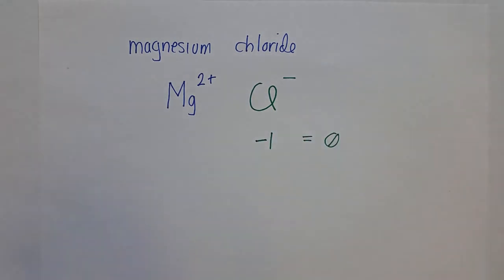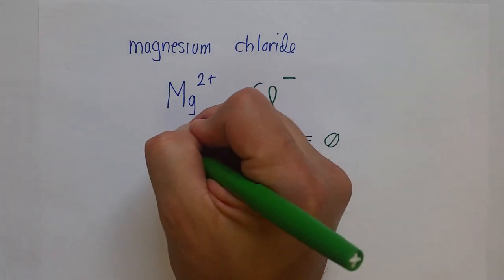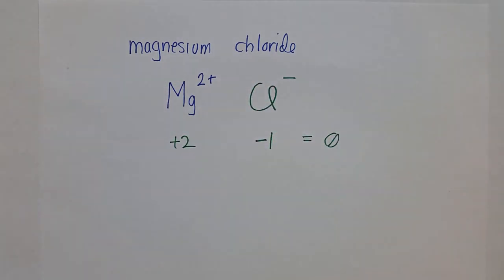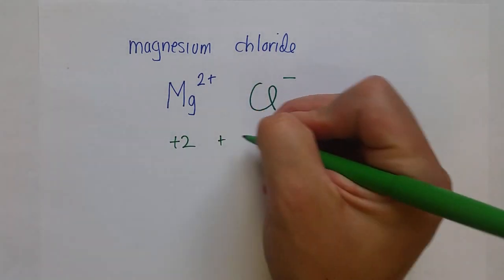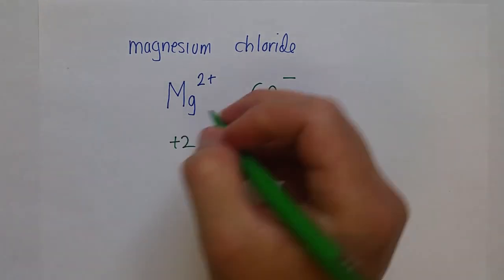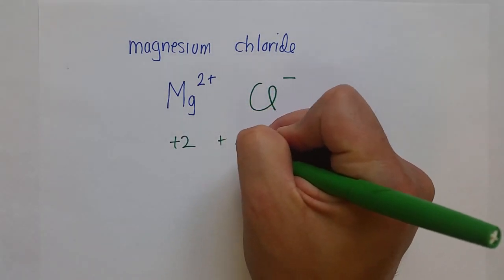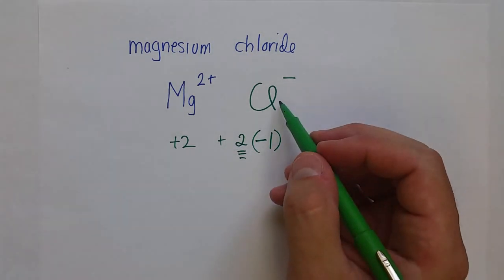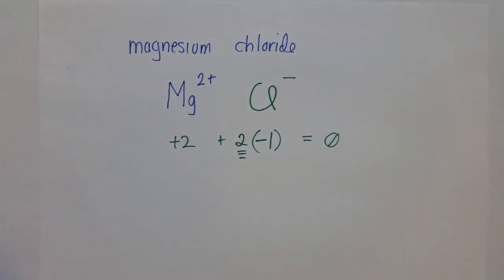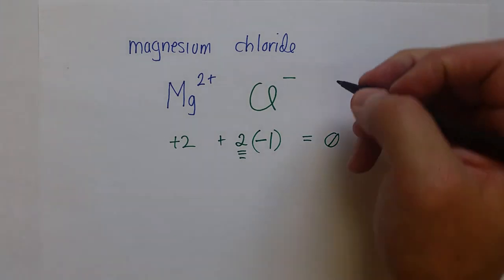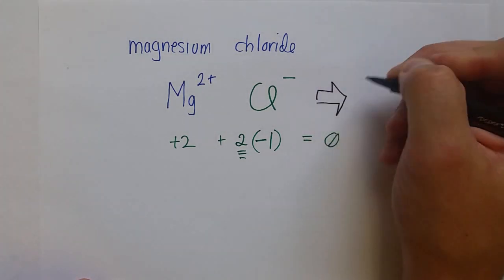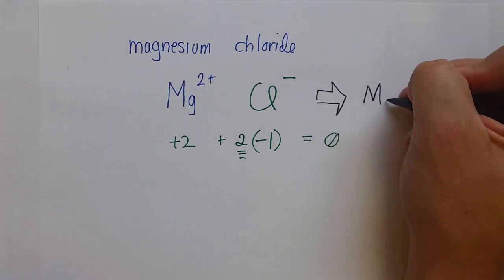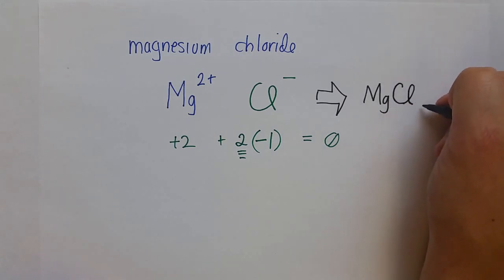There's a minus one here and a plus two over here. Plus two plus a minus one does not equal zero. And so I have to multiply this negative one by two to make it equal to zero. So that means that I need two chlorides to react with the one magnesium. And so, the correct formula for magnesium chloride is MgCl2.